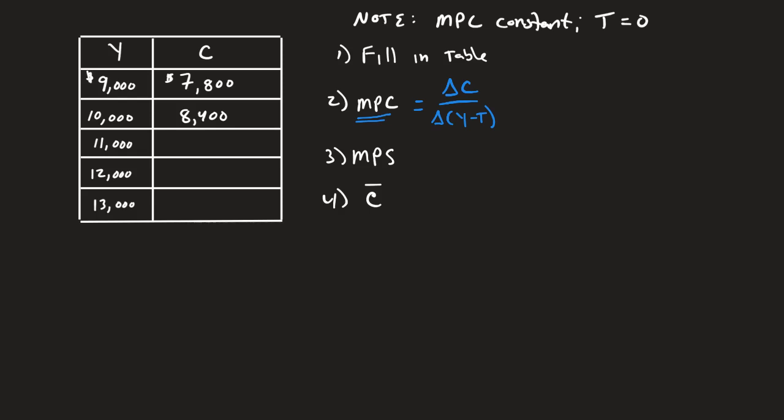Well, taxes are equal to zero. So we're just going to look at how much is consumption changing from here to here divided by how much income changed from here to here. So consumption went up by $600 when income went up by $1,000. And therefore, we would say the MPC is equal to 6 over 10, or what we usually talk about it in decimal form is 0.6.